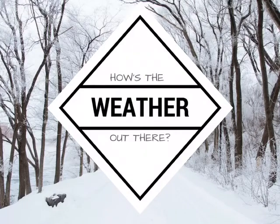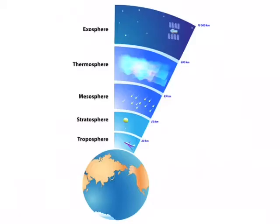Welcome to our second video about weather. Today we're going to be talking about condensation and precipitation. Last time we talked about the different layers of the atmosphere. Today we're going to be focusing on just the troposphere, which is the layer of the atmosphere closest to Earth where the weather happens.